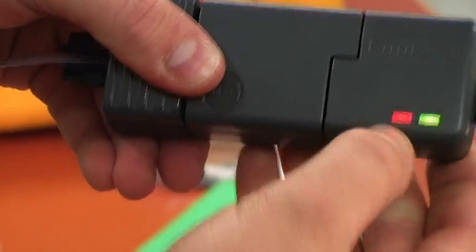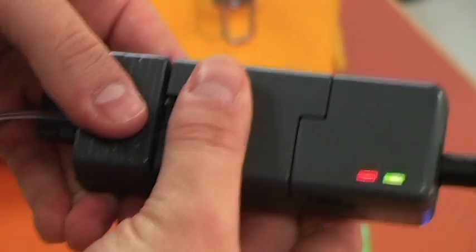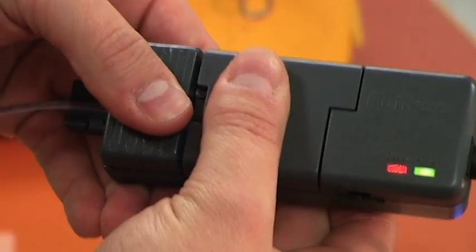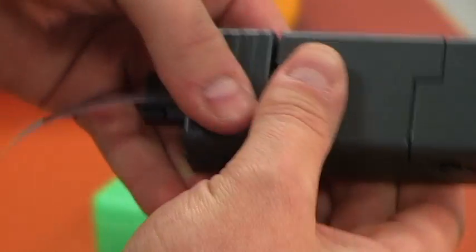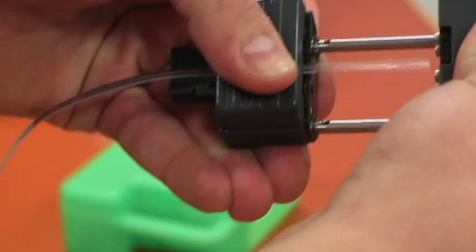We'll shut the lid. And when this light turns green, we're going to press down on both sides and pull it apart.